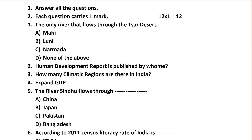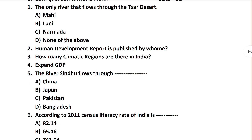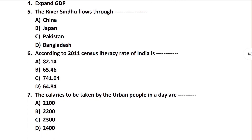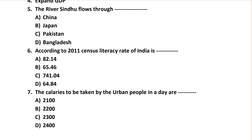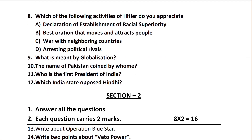Let's see the one-mark question: the river that flows through the desert. This is a first chapter question. The options are China, Japan, Pakistan, and Bangladesh. The Sindhu Nadi is only located in Pakistan, so the answer is Pakistan. That's a simple question.